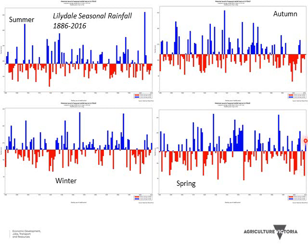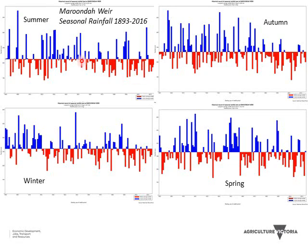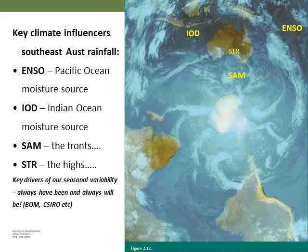You can see those two different springs there — 2015 quite dry and 2016 a bit above average. Going further up the hill to Maroondah, it's quite wet — over 1100 mm average from 1893 through to last year. Looking at the last 20 years, only three were above average and 17 were dry. Higher rainfall sites tend to show more of that dry pattern. Even in their driest year they're still getting over 600 mm, but it does have a broader impact on catchments.